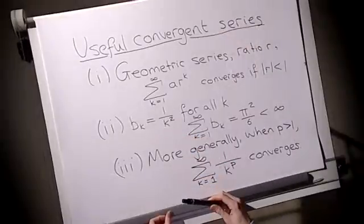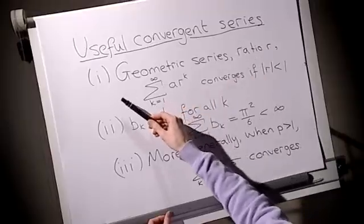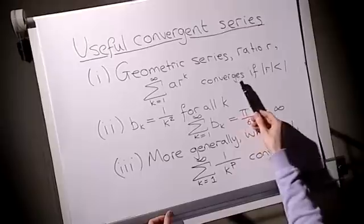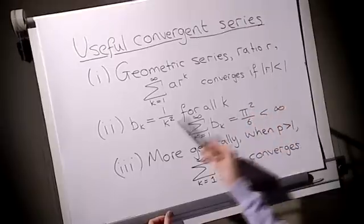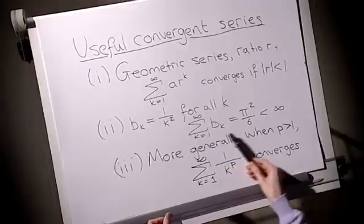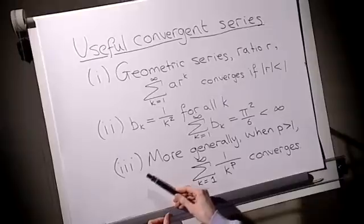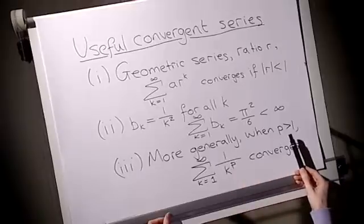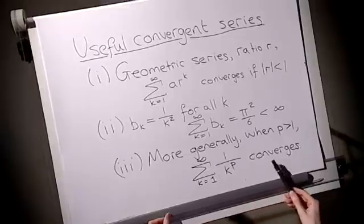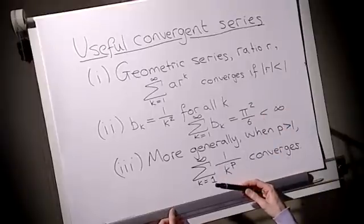So in order to use this, we're going to need to have some useful convergent series available to us to use as our potential bk's. As a quick reminder, here's a few. Geometric series with a common ratio r, they look like this. And we know they converge if the modulus of r is less than 1. Another useful series is the bk is 1 over k squared for all k. And then this infinite series converges. Incidentally, its value is pi squared over 6. And more generally, when p is positive and bigger than 1, we can form this infinite series, sum from 1 to infinity of 1 over k to the p, and this converges for all p bigger than 1. So this gives us a few useful convergent series as our potential bk's to use in our theorem.